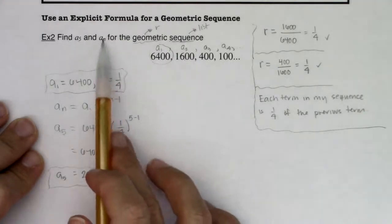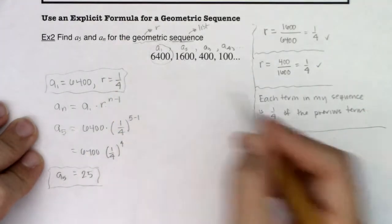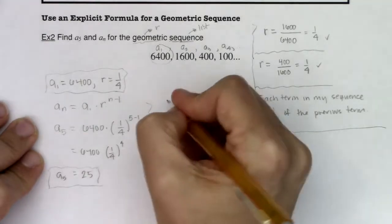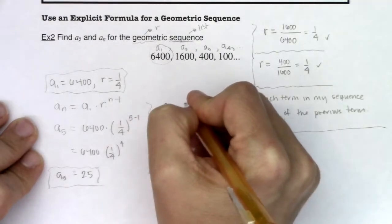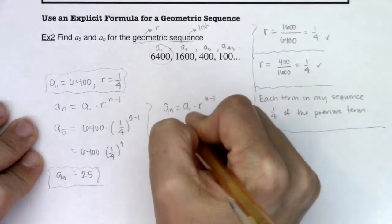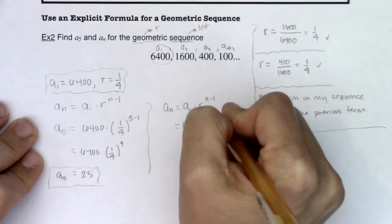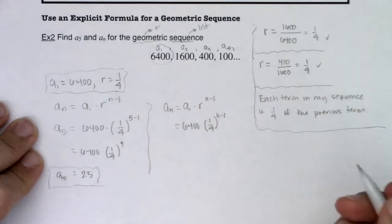So let's go find a sub n now. We know a sub n is equal to a sub 1 times r to the n minus 1. So we know this is 6,400 times 1 fourth to the n minus 1. And that's how we leave it.